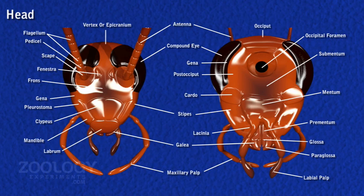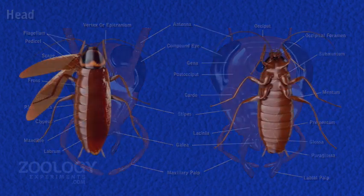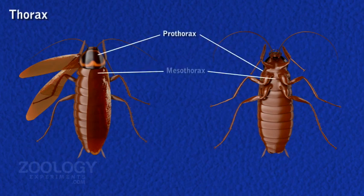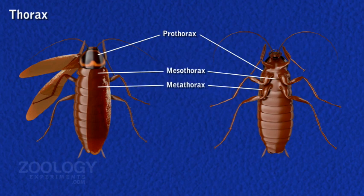The lower end of the head bears the pre-oral cavity and mouth, surrounded by mouth parts. These consist of labrum, mandibles, maxilla, labium and hypopharynx. A head with mouth parts directed downwards is called hypognathous. The thorax is the middle region of the body and consists of three distinct segments called the prothorax, mesothorax and metathorax.